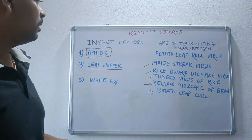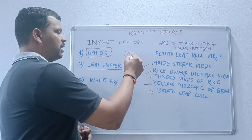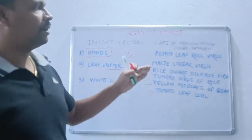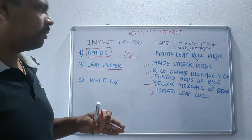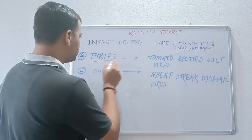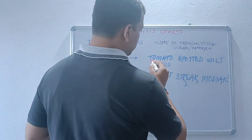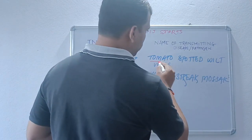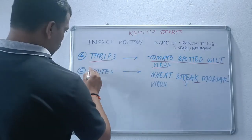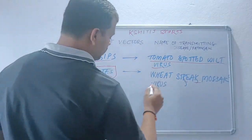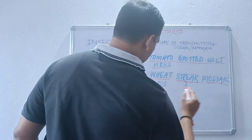These are very important questions for your exam — every year you will have one or two questions on insect vectors and pathogens transmitted by them. Thrips transmit Tomato Spotted Wilt Virus, and mites transmit Wheat Streak Mosaic Virus. That is all about today's Shithish Shorts.